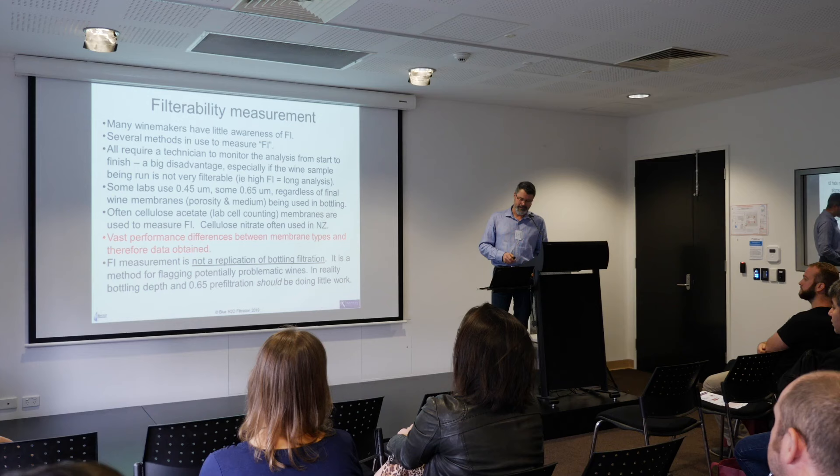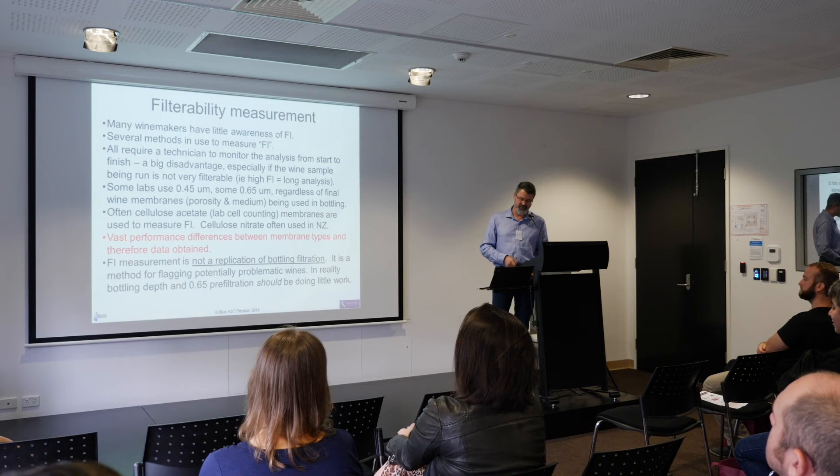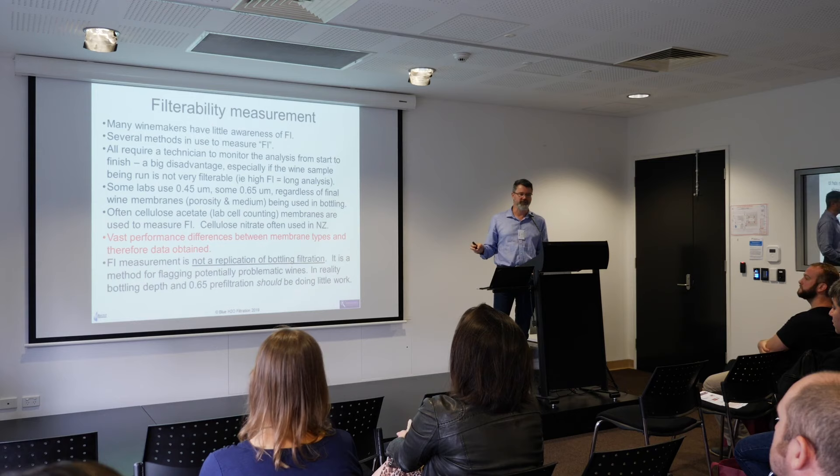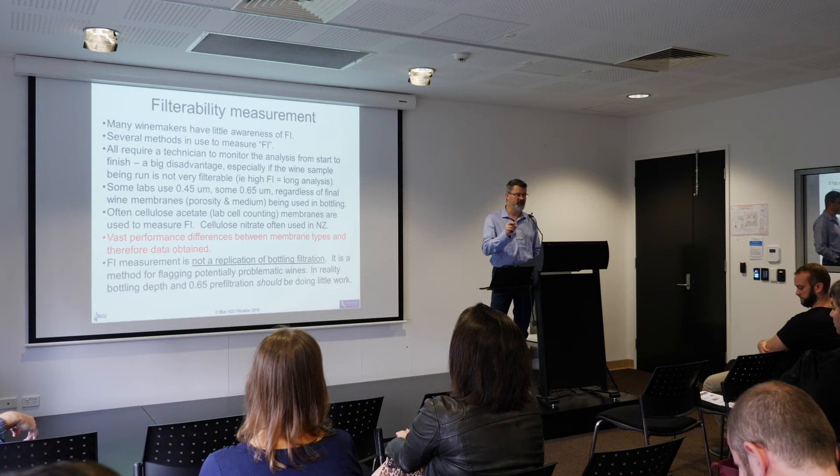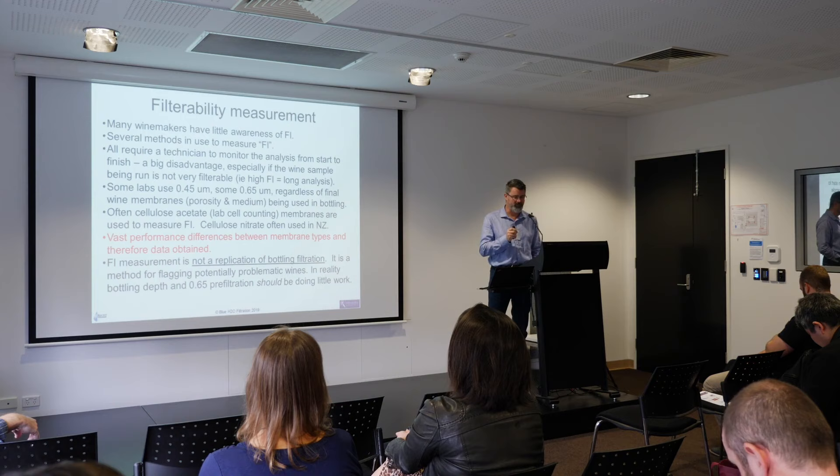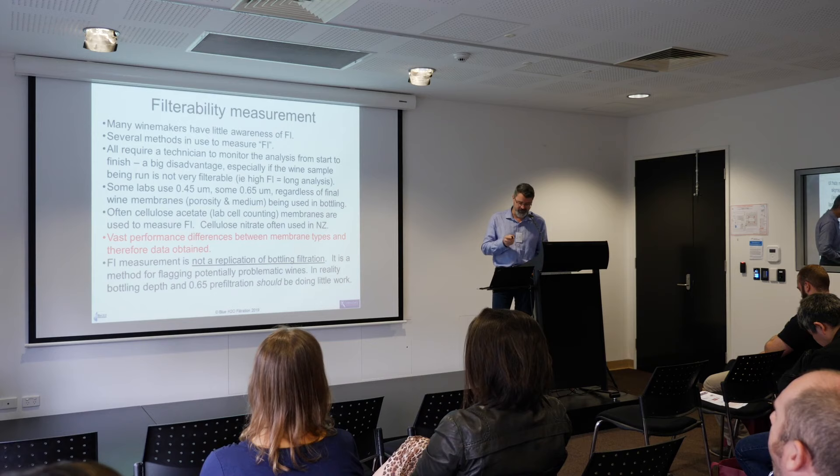There are various methods used around the world for measuring filterability. One of the main problems is that somebody has to stand there and watch it, time it, or move measuring cylinders — which is horrible. Nobody likes to do that. Automation removes the human factor. There's also variation in the test discs used — often whatever's close to hand. Filterability is a relative measurement, so the test discs should be identical to the membrane you're running on your packaging line. You often see cellulose acetate used, and in New Zealand they often use cellulose nitrate, which is a flammable goods item and really hard to ship.